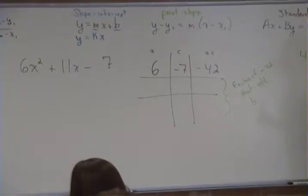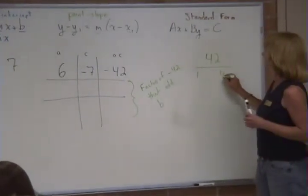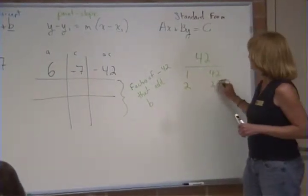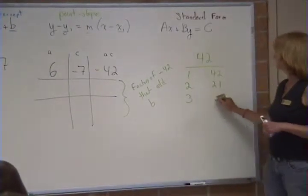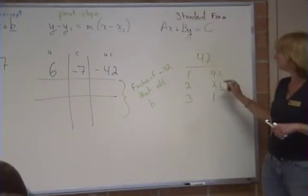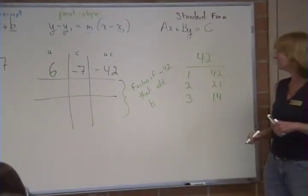So you need to go over here and start listing. 1 and 42 are too far apart. 2 and 21, we're getting closer. 3 and 3 goes in there. 14. That's it. There we go.